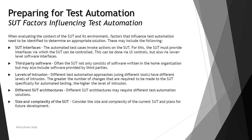When you talk about preparing for test automation, one of the important aspects is to understand what are the several factors from the application point where it can impact or influence test automation. When evaluating the context of the SUT and its environment, factors that influence test automation need to be identified to determine an appropriate solution. These may include the following parameters shown on the screen right now.